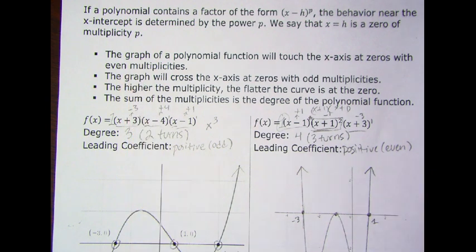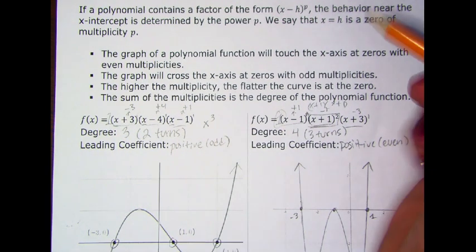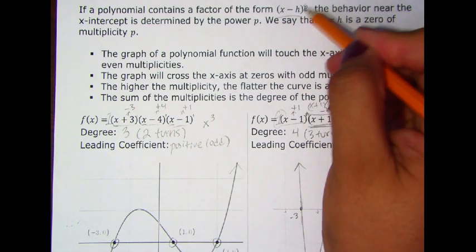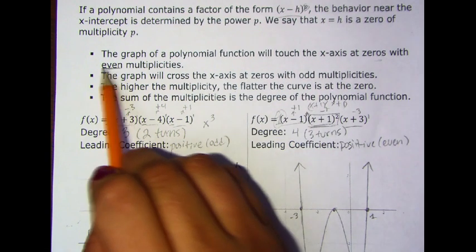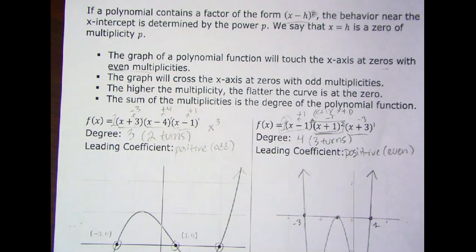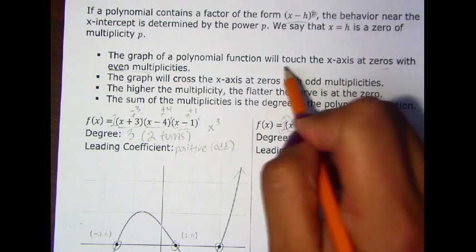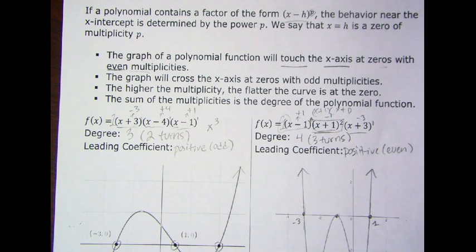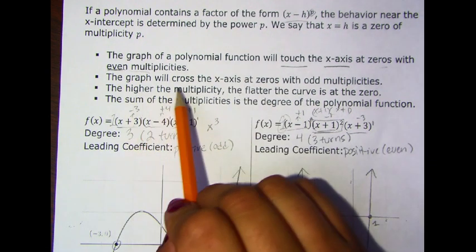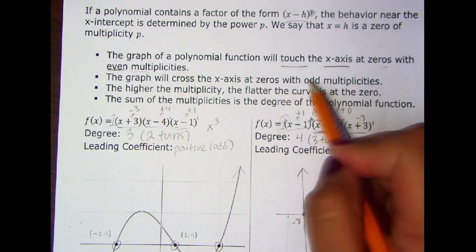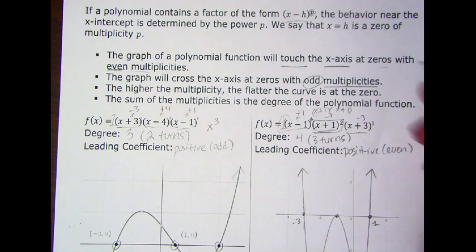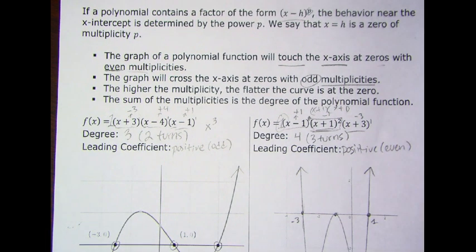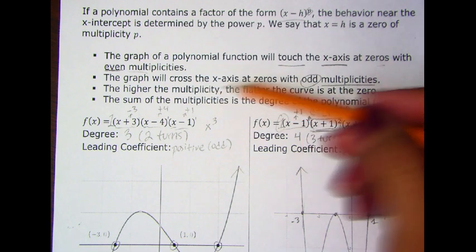If the factor has an even multiplicity — like 2, 4, or 6 — you will have a graph that will touch the x-axis and turn. So touch and turn. The graph that will cross the x-axis will have odd multiplicity, like to the third power, fifth power — anything that is odd. The higher the multiplicity, the flatter the curve.